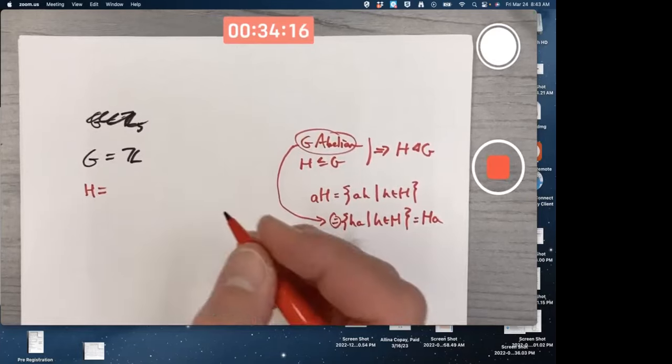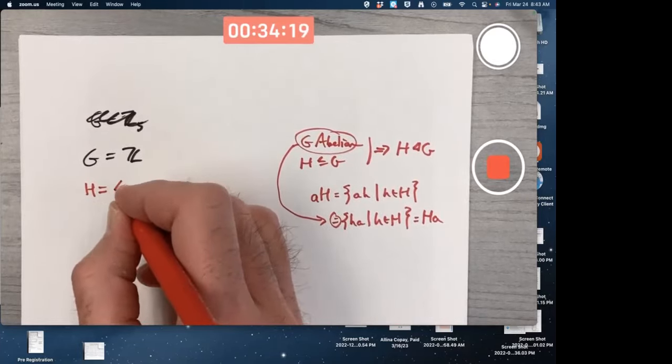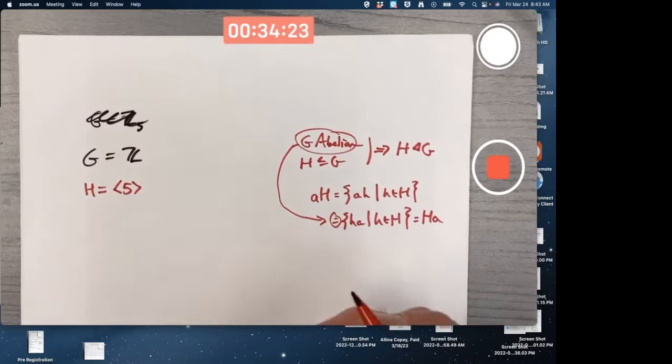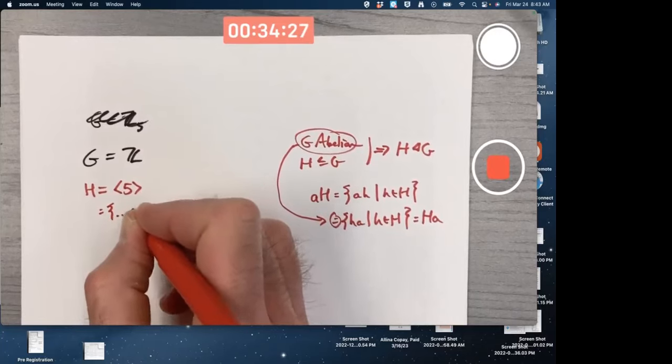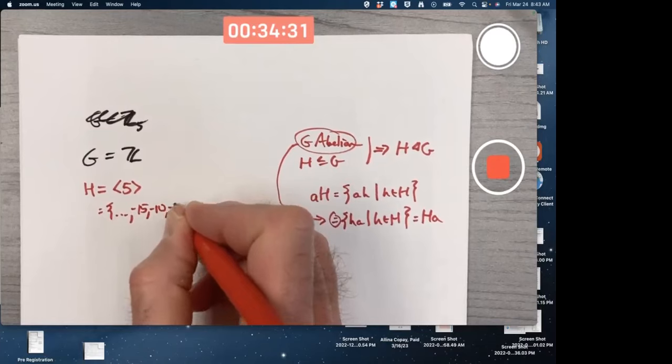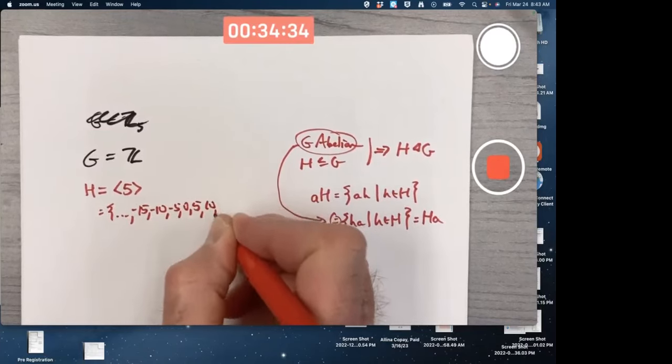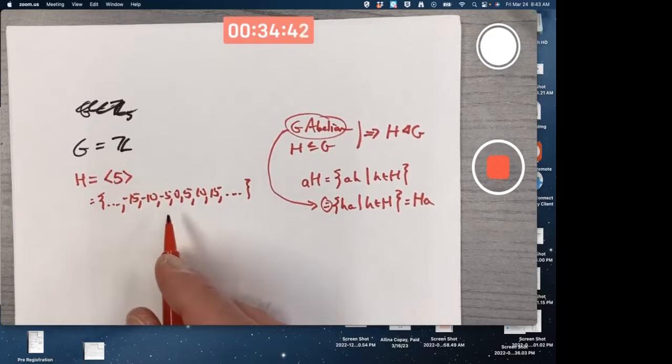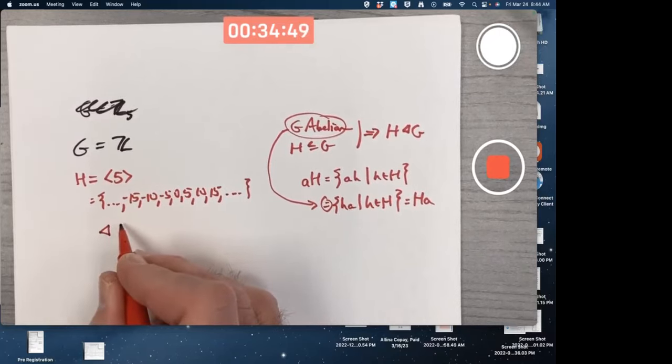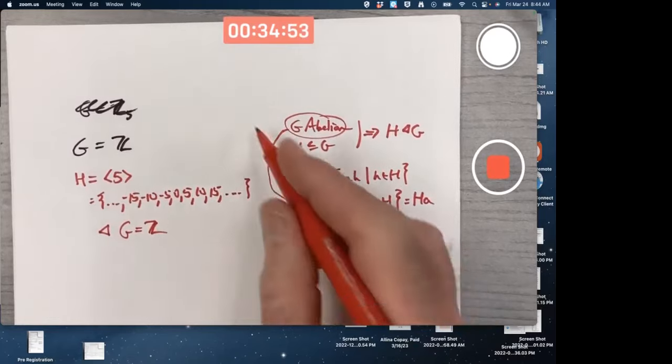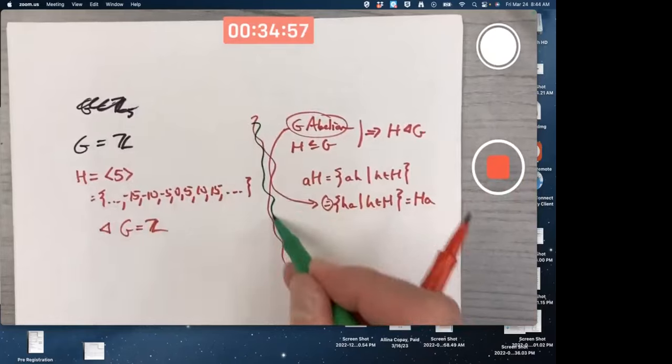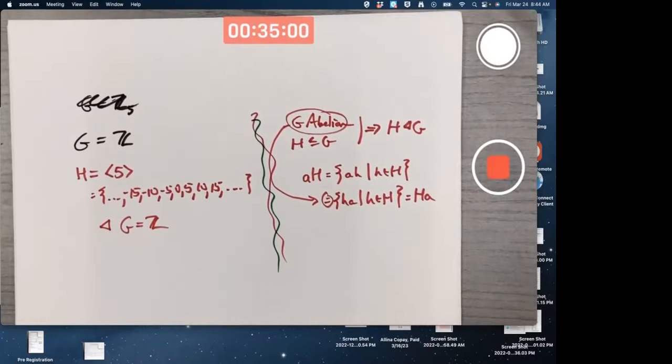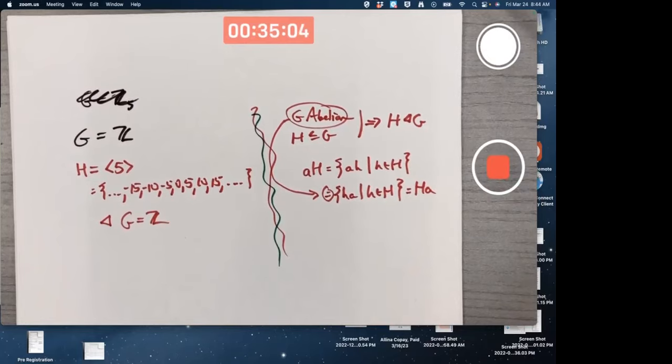What subgroup should we pick? We can pick pretty much anything we want. How about the cyclic subgroup generated by 5? In other words, all integer multiples of 5. Still an infinite set there, right? Z is an infinite group. The subgroup's an infinite subgroup. It is normal in G equals Z because of what I said over here. So the factor group can be formed and the group operation is well-defined.